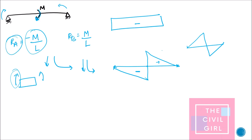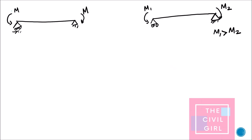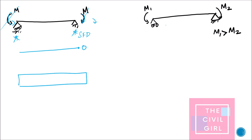I think you guys are getting every answer correct — keep tracking your progress. Next question: equal and opposite moments at the ends. These moments cancel each other for shear force calculation, meaning RA and RB are both zero, so the shear force diagram is zero. For the bending moment diagram, it is just like a fixed end beam — the bending moment diagram is a rectangle.